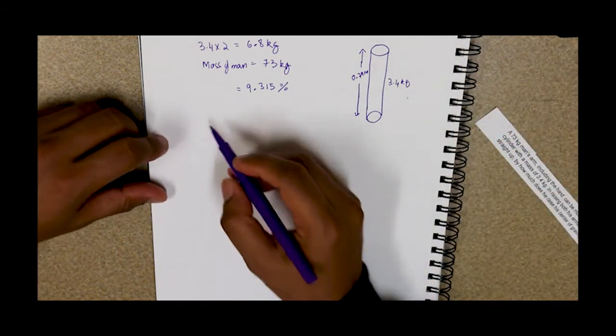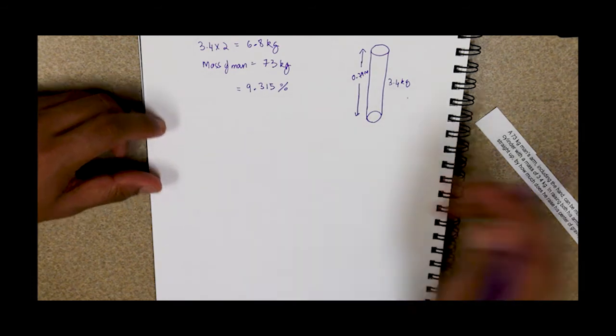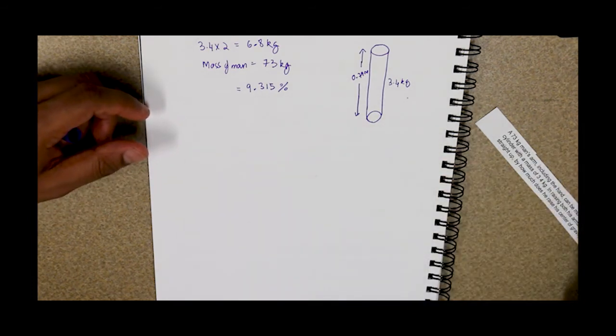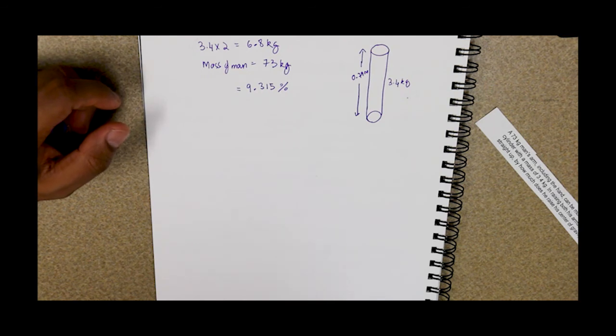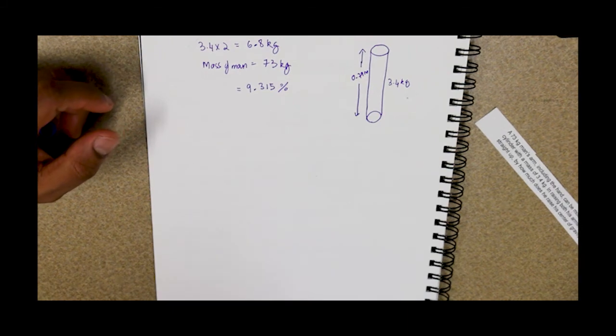We will multiply 9.315%, which is 0.09315, into 0.79, which is the height.